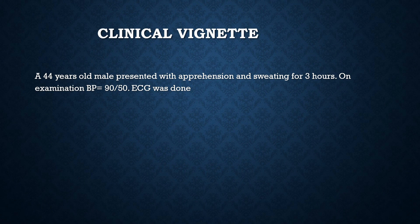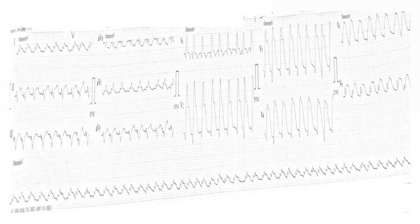A 44-year-old male presented with apprehension and sweating for three hours. Examination shows blood pressure of 90/50. An ECG was done, and now we have to evaluate certain things on this ECG.